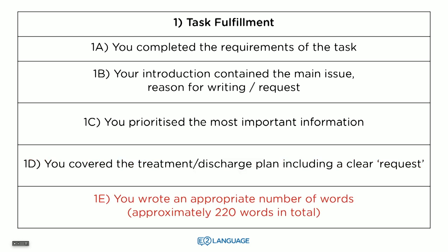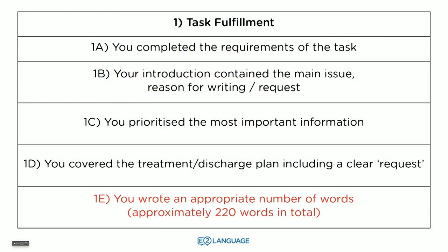Criterion 1E: you need to write an appropriate number of words. The OET are not too strict on this — it's different to the IELTS. They say approximately 220 words in total, including the address, because it does depend on the case notes and the task — there's no real set number. But if you're writing under 200 words in total, you're probably leaving out important information. And if you're writing more than 220 words, you're probably including a lot of irrelevant case notes that the reader doesn't need to know about.